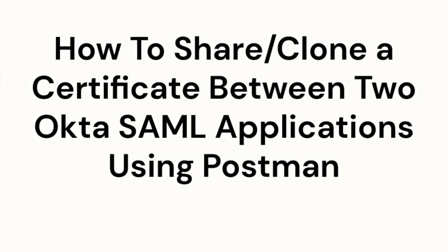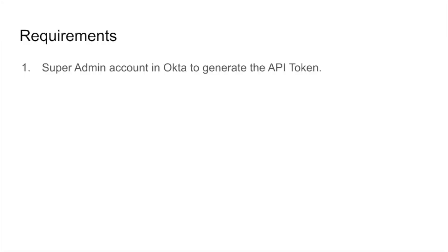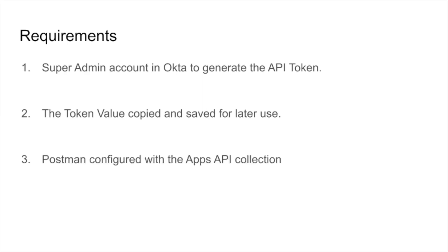This is where Postman comes in handy. To share an existing certificate with a new app integration, you'll need the following: a super admin account in Okta to generate the API token, the API token generated for the super admin account, and Postman installed and configured with the API token. You'll also need to add the apps API collection to Postman. Once everything is set up, you'll be able to share certificates between apps.